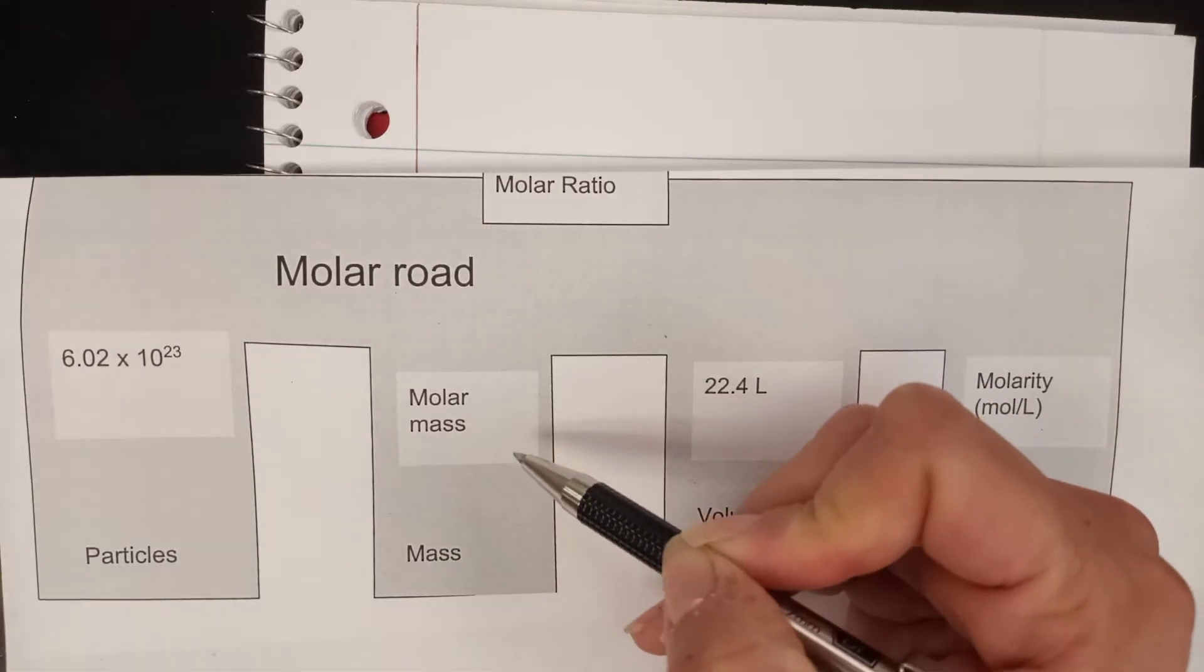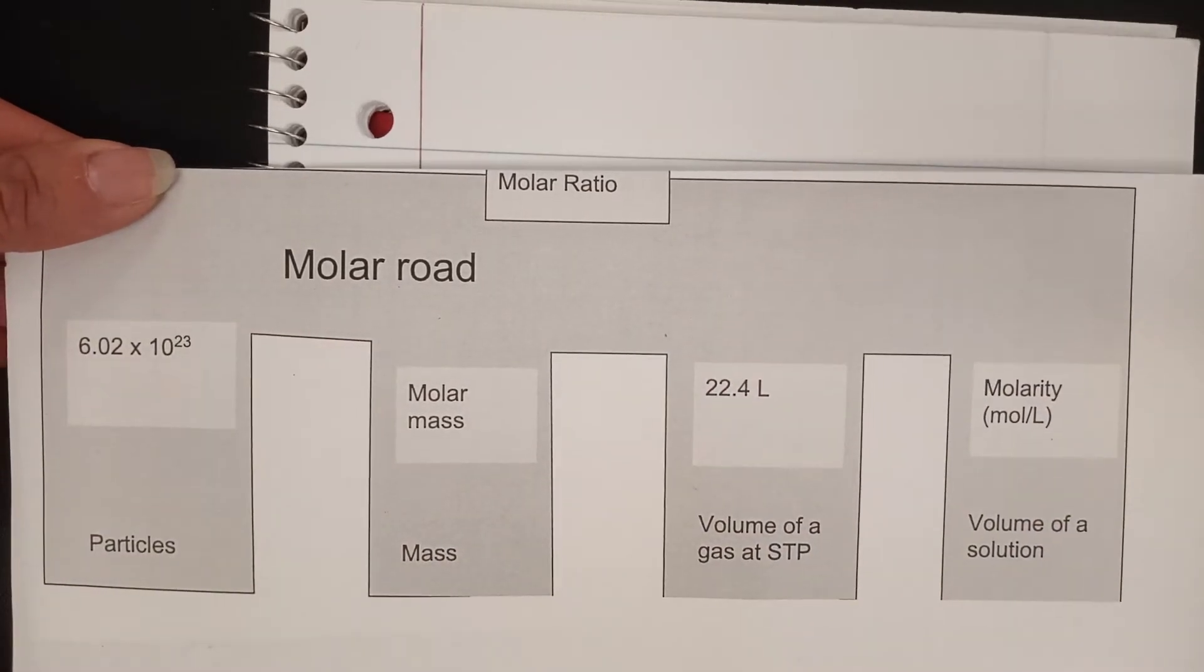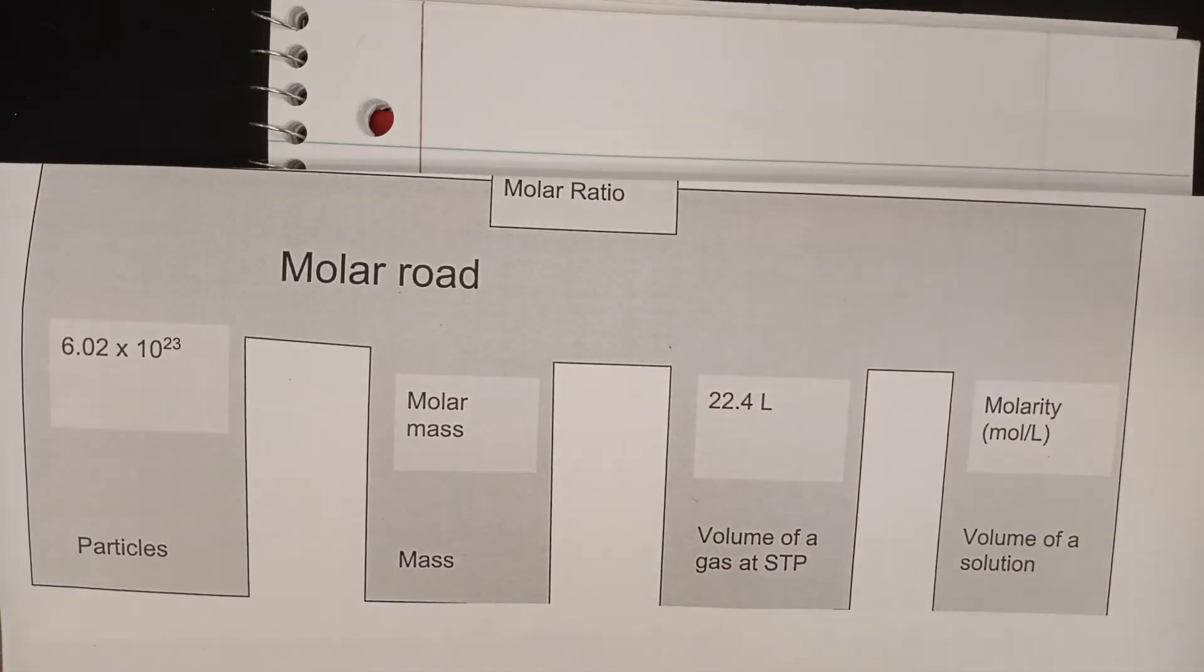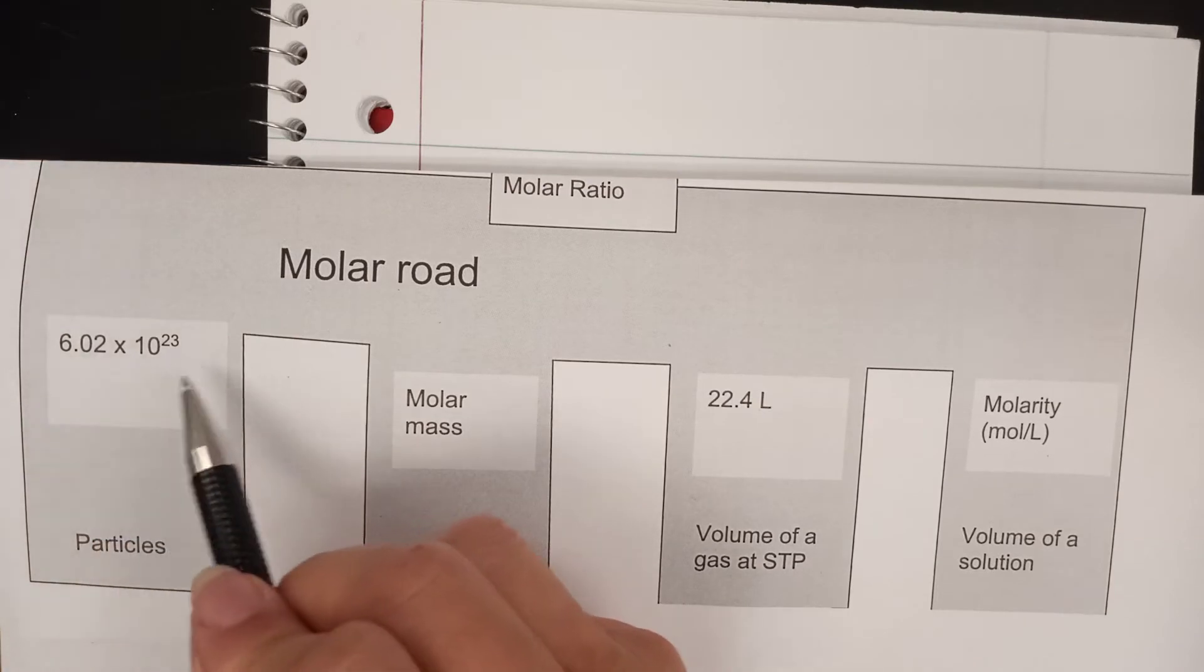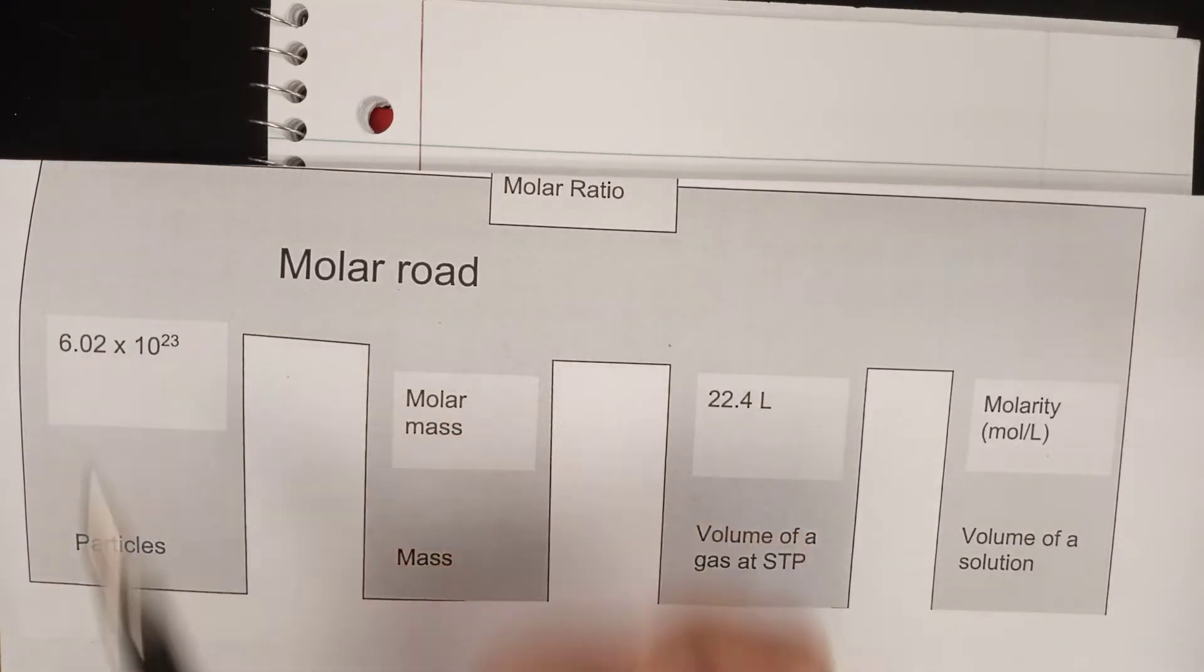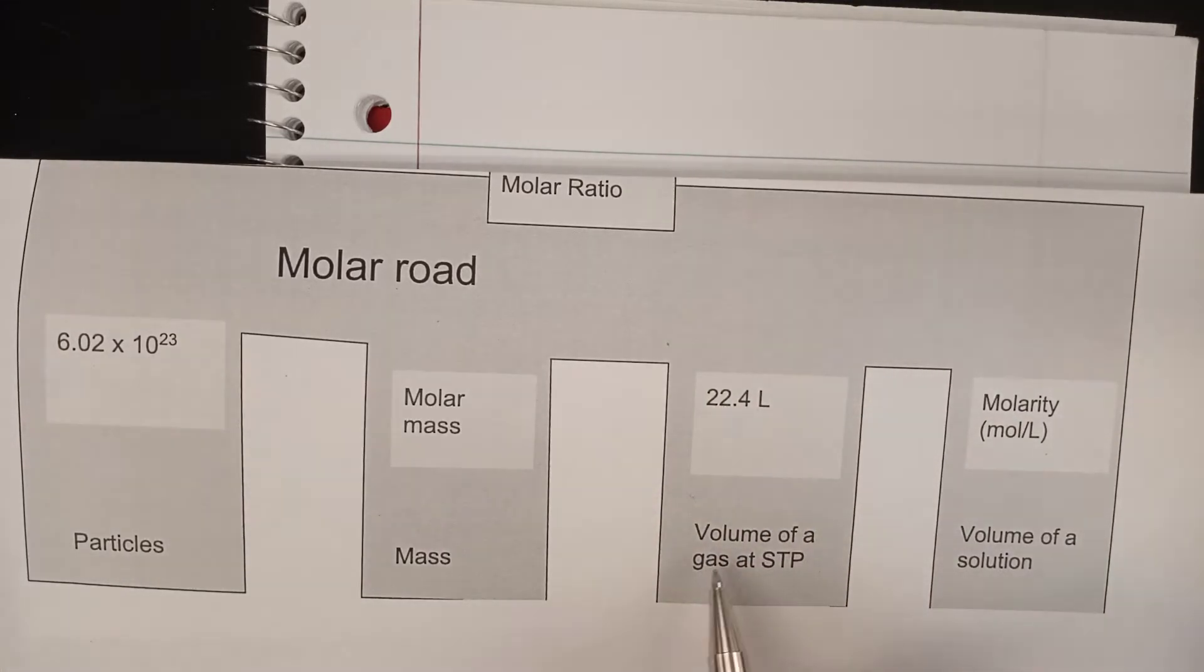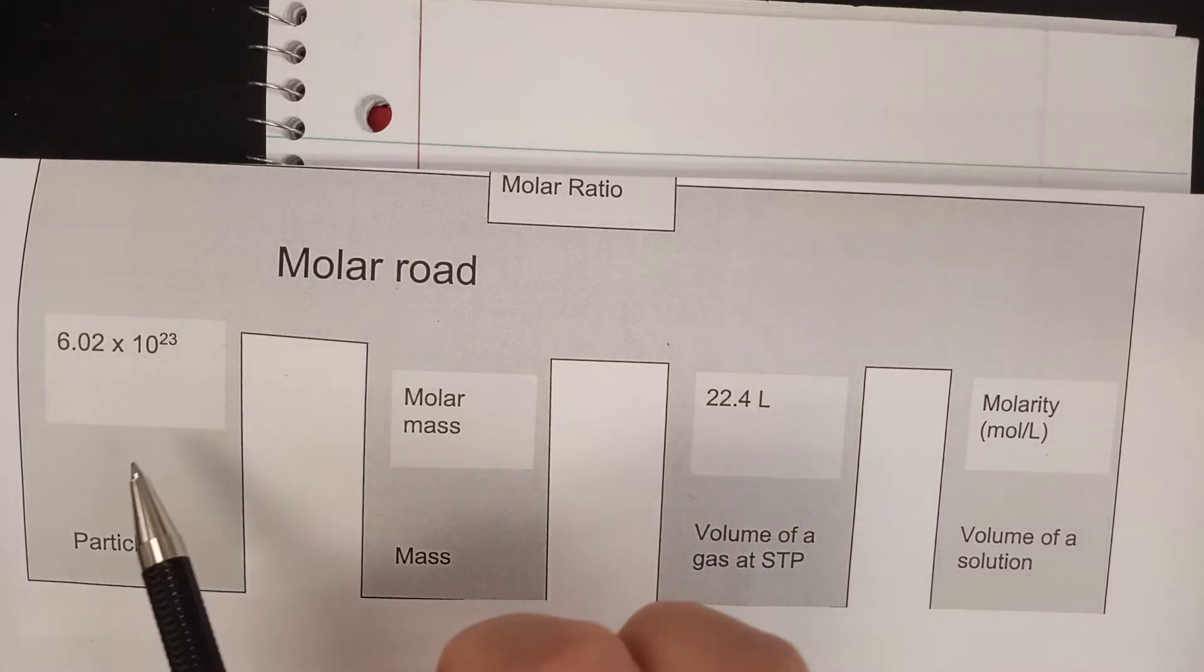We've already done the ones that get us directly between mass and moles, but we're especially going to look at what it takes to get from mass to something else completely different. These boxes right here are gates, the constants you need to get from one thing to another. For particles, the number is always Avogadro's number, 6.02 times 10 to the 23rd. For volume of a gas at STP, it's 22.4 liters.